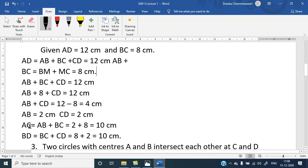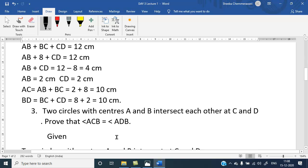So, the rest we have to find AC. AC equal to AB plus BC. AB is 2 and BC is 8. So, 2 plus 8 is 10 cm. BD is BC plus CD. BC is 8 cm plus CD is 2 cm. That is 8 plus 2 is 10 cm.